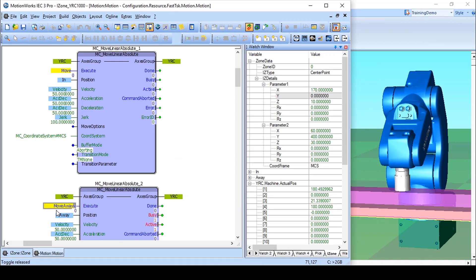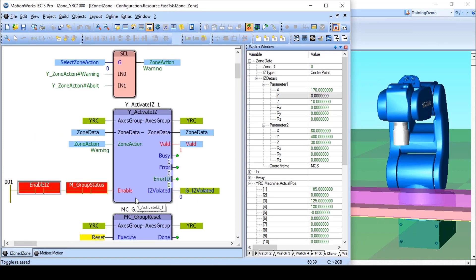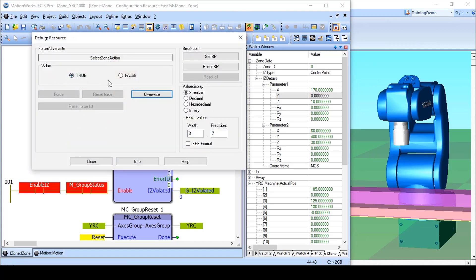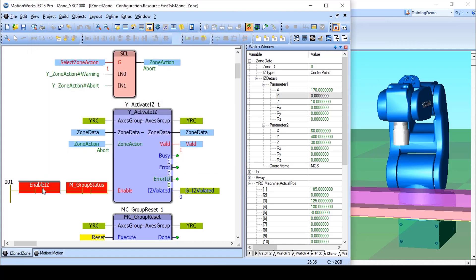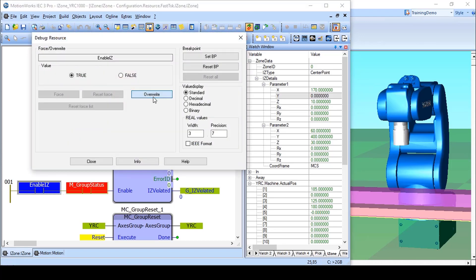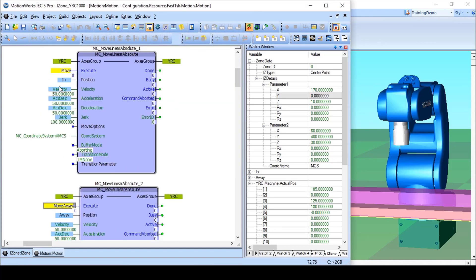Now I'll move back out, and you see that IZ_Violated is now false. This time I'll set the zone action to abort, and I'll re-enable the block and move back in.